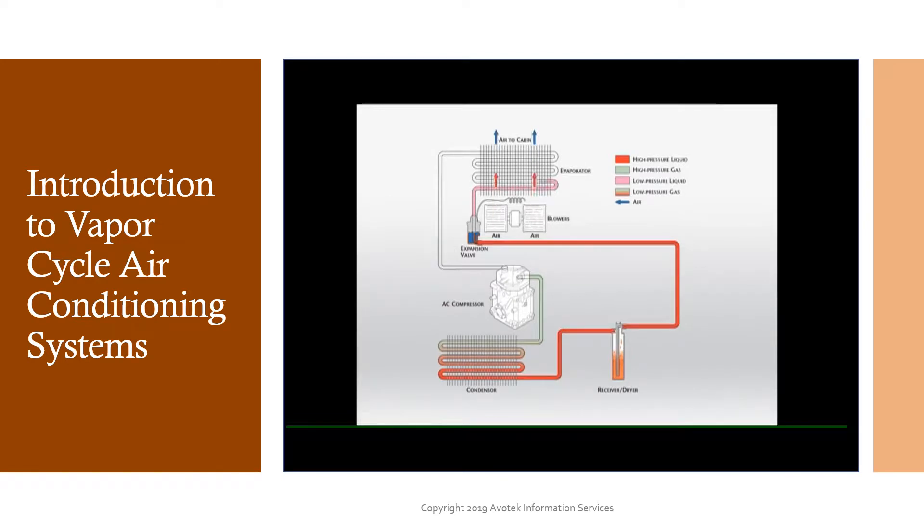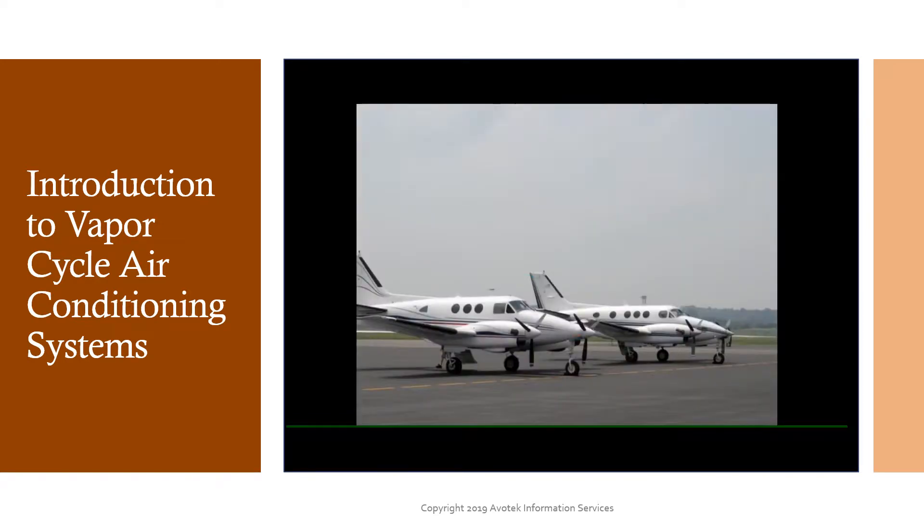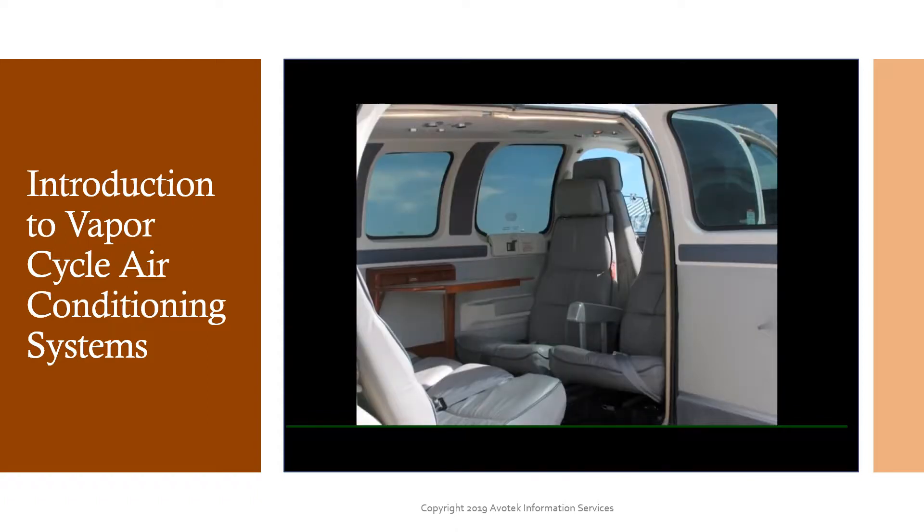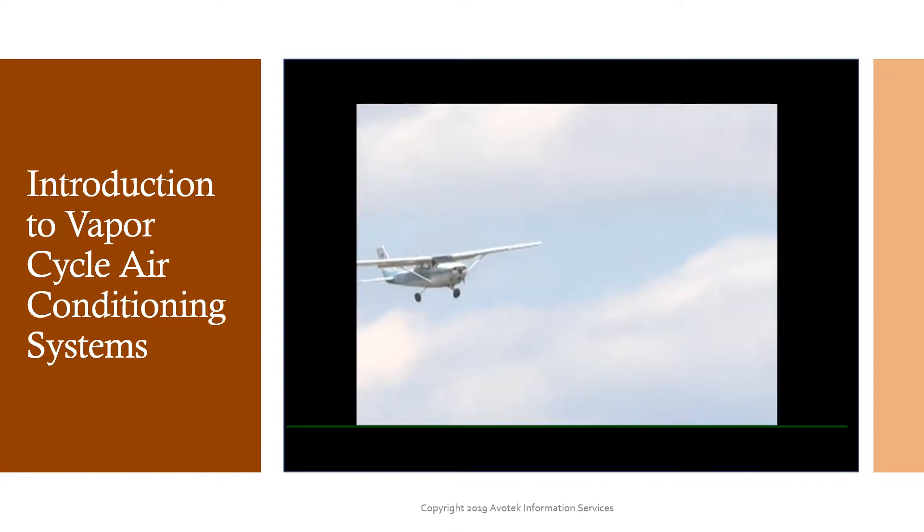The vapor cycle air conditioning system is a common system found in many small and medium-sized general aviation aircraft. In today's modern aircraft, passenger comfort is a very important issue. With air conditioned homes, offices, and cars, people want and expect similar comfort when they fly.